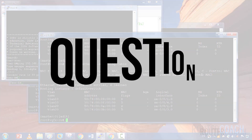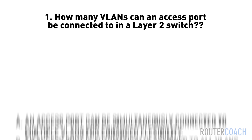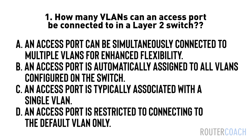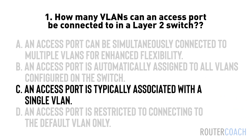Let's move on to the next lab. It's question time. Question one: How many VLANs can an access port be connected to in a layer two switch? A — an access port can be simultaneously connected to multiple VLANs for enhanced flexibility. C — an access port is typically associated with a single VLAN. D — an access port is restricted to connecting to the default VLAN only. The answer is C. An access port in layer two switching is generally associated with a single VLAN, and each access port is configured to belong to a specific VLAN.